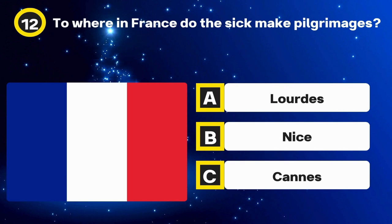Question 20. La Gioconda is better known as what? Options: Mona Lisa, The Last Supper, The Birth of Venus. The answer: Mona Lisa.